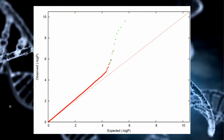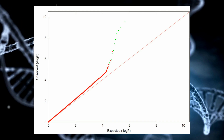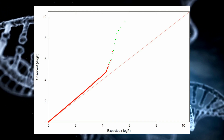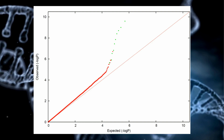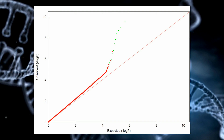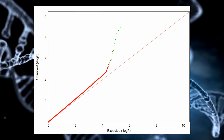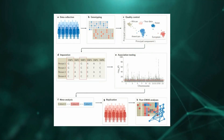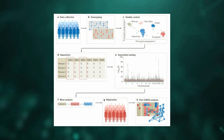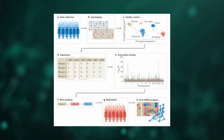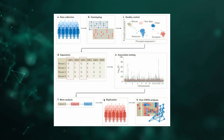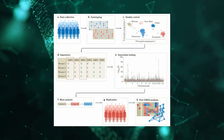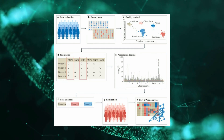Previous research has demonstrated that failing to account for this genetic diversity can lead to confounding in association studies, thereby reducing the accuracy of results. To improve the precision of detecting genetic risk factors, it is essential to consider both the genetic and non-genetic heterogeneity of U.S. Hispanic populations.